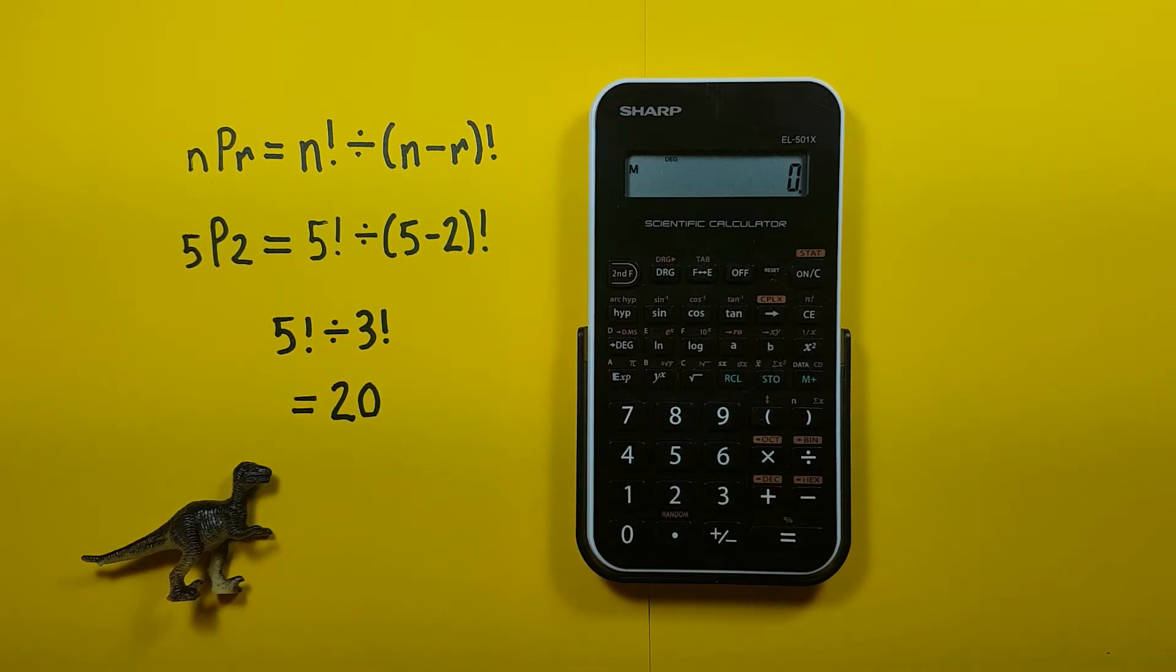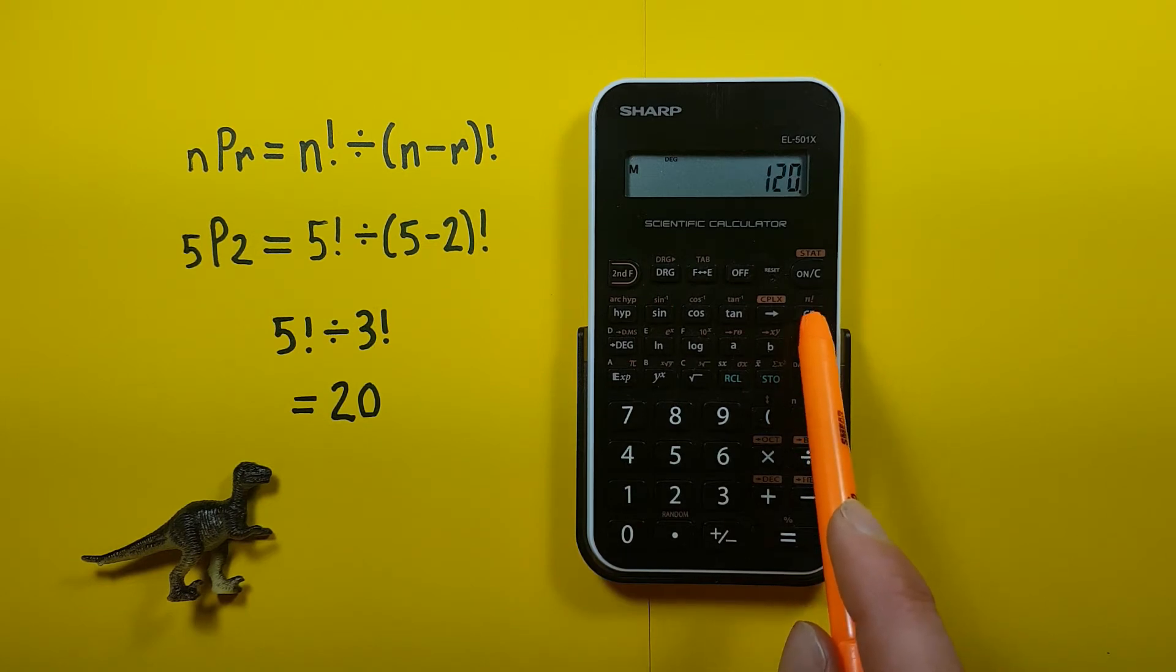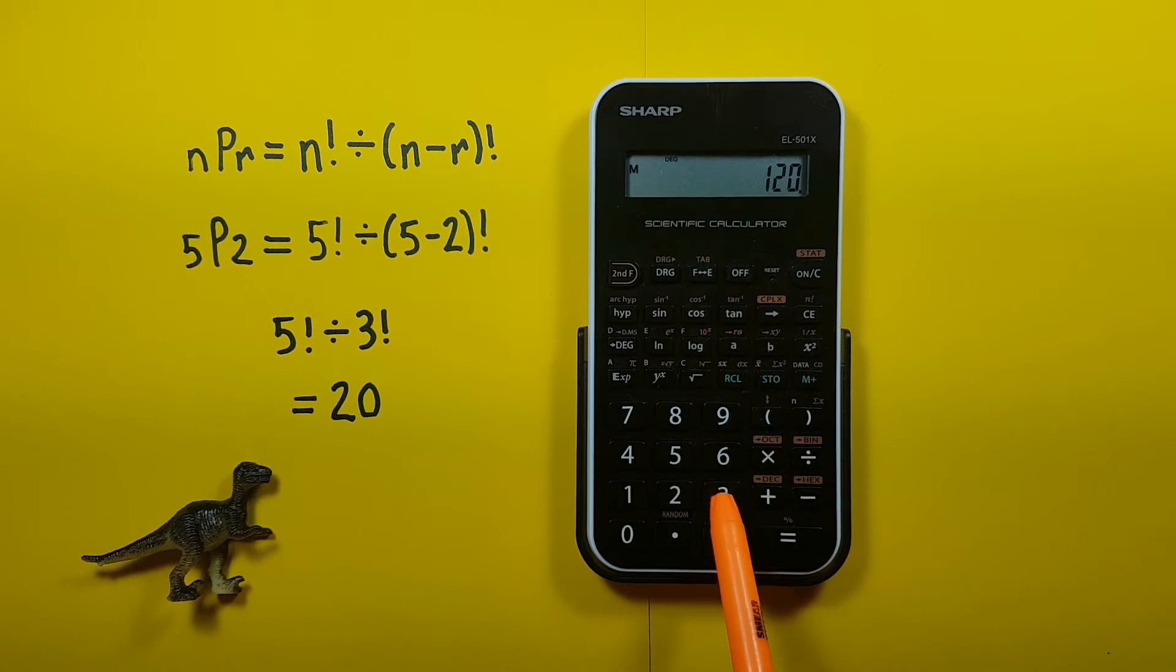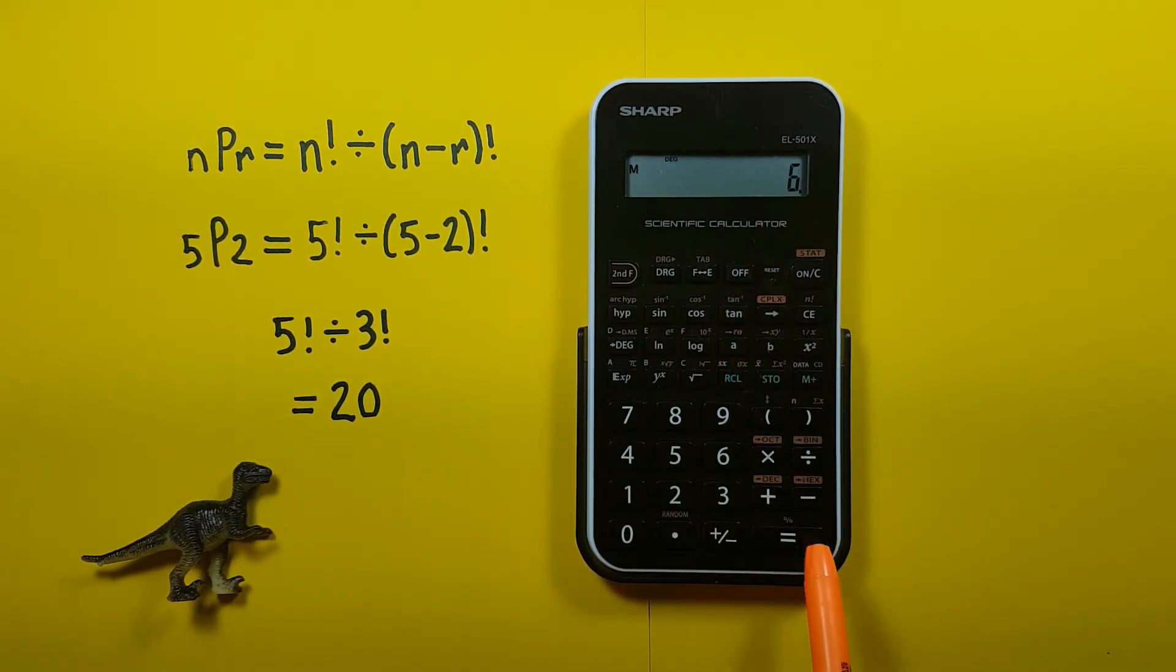So this one's easy. If we just enter 5 second function factorial, again that gives us 120, divided by 3 second factorial there we go and we press equals and this gives us 20 letting us know there are 20 possible permutations of choosing 2 from 5.